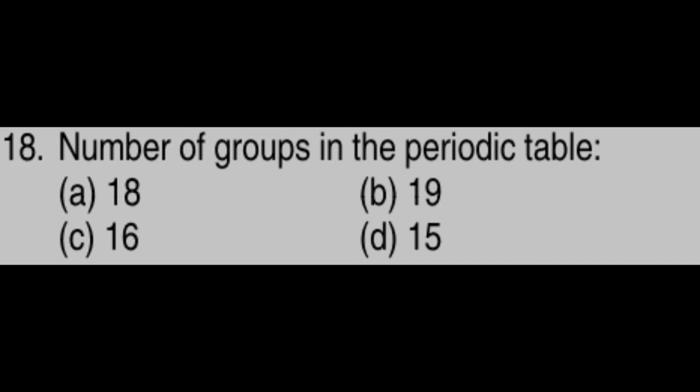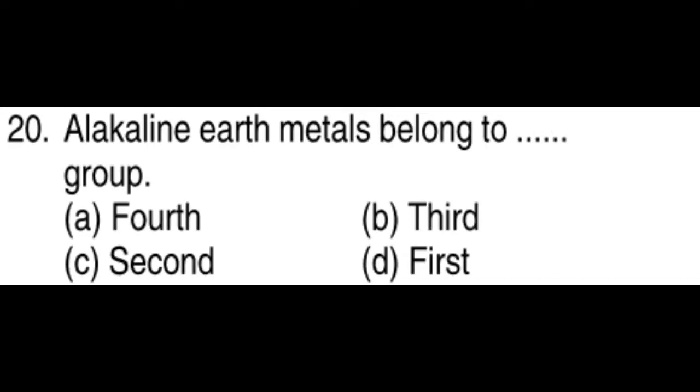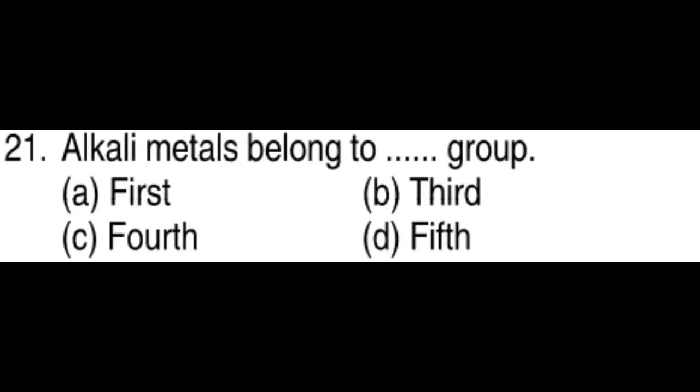Number of periods in periodic table: 7. Number of groups in periodic table: 18. Number of blocks in periodic table: 4. Alkaline earth metals belong to Second group. Alkali metals belong to